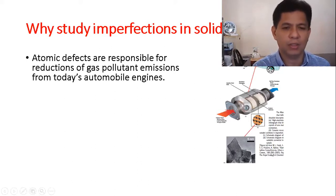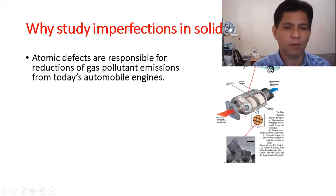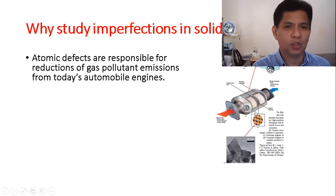As you can see in this figure, the catalyst is placed in the exhaust system of your vehicle. The imperfections in solids provide adsorption surfaces for the raw material to adhere so that it will be converted from carbon monoxide to carbon dioxide. The adsorption forces are provided by the imperfection in solids.